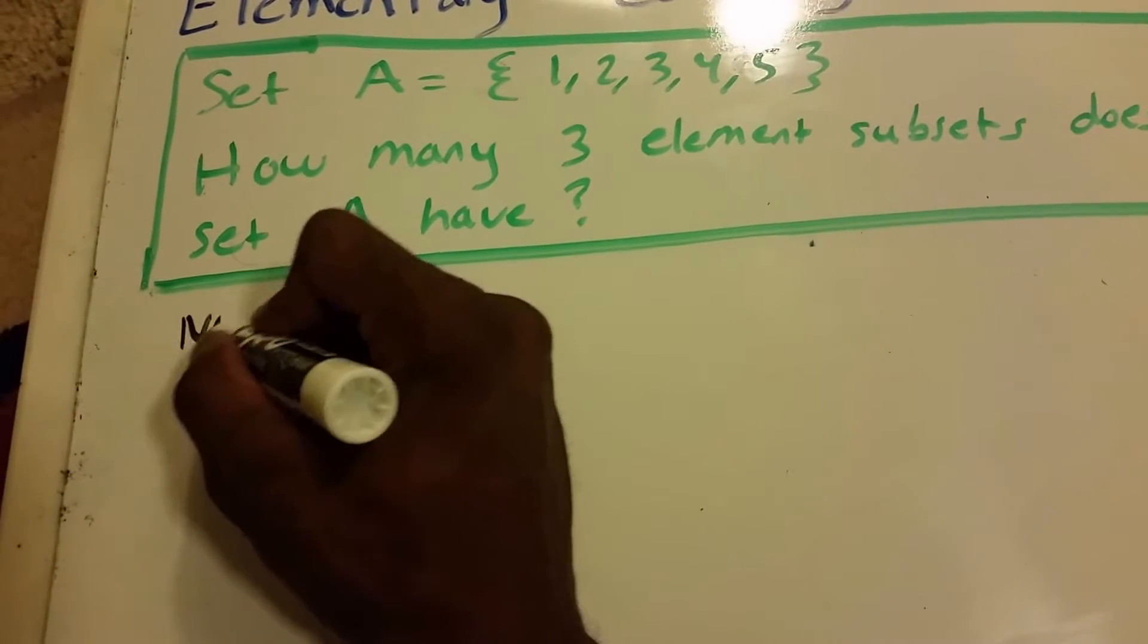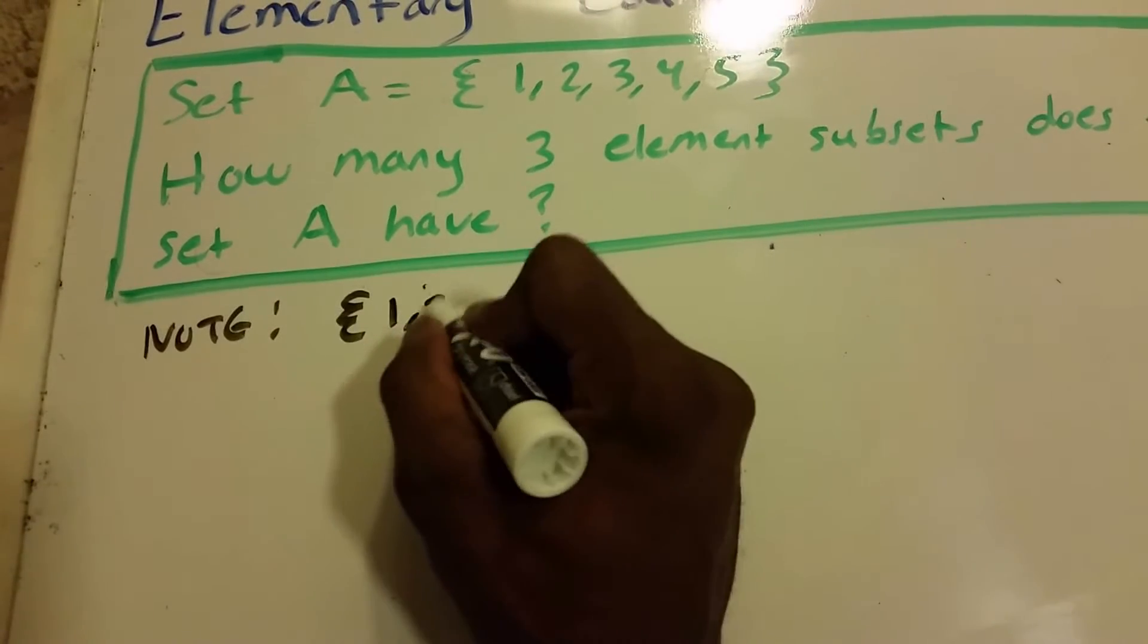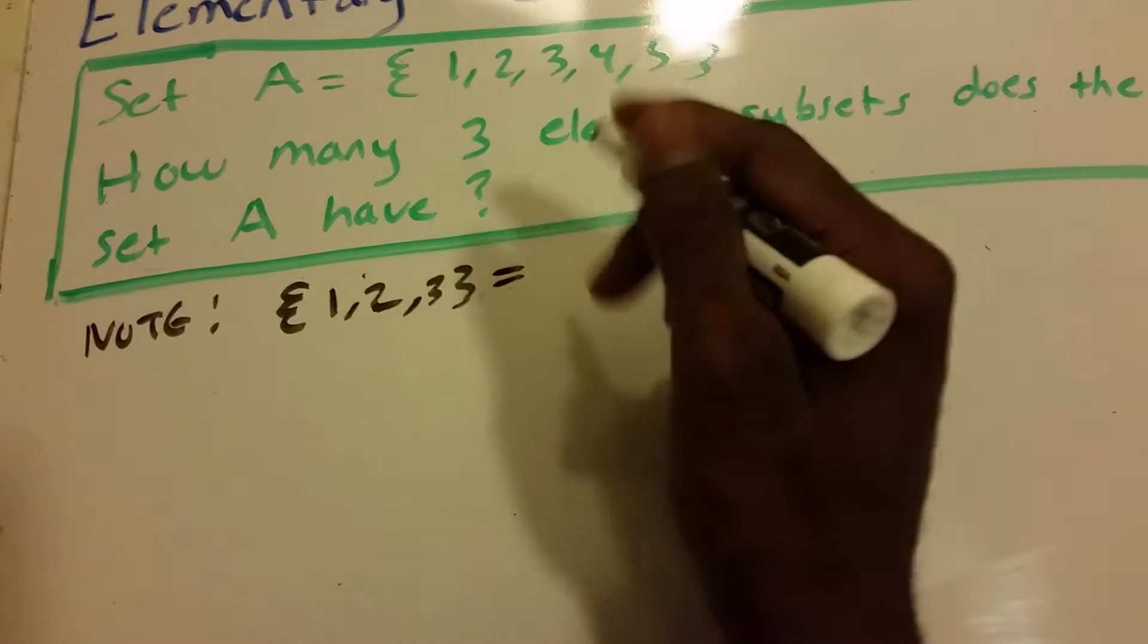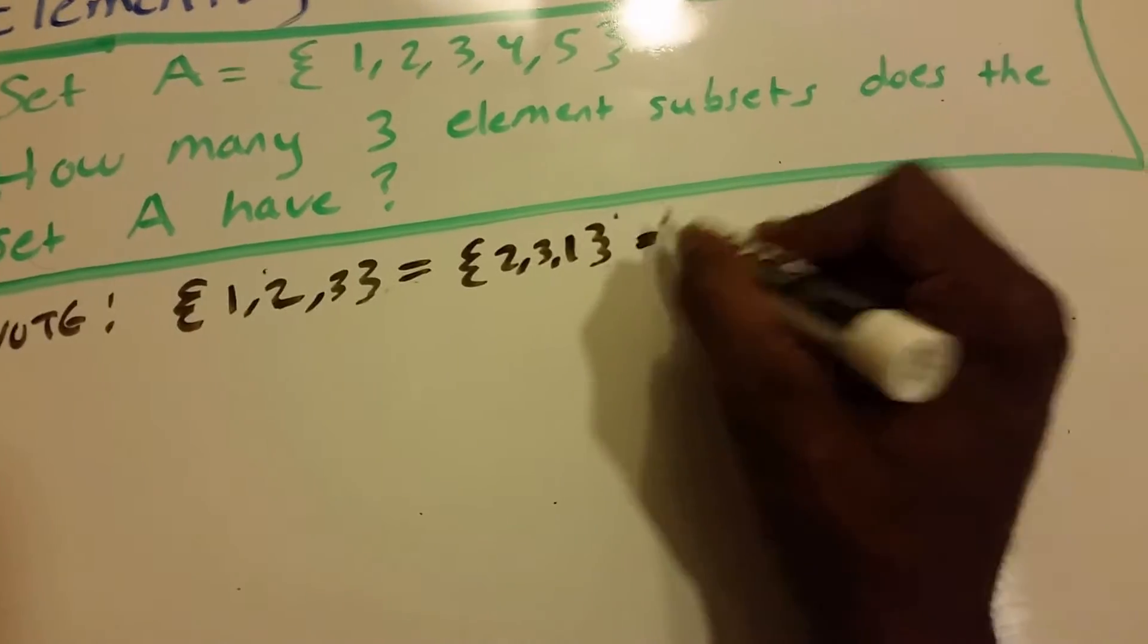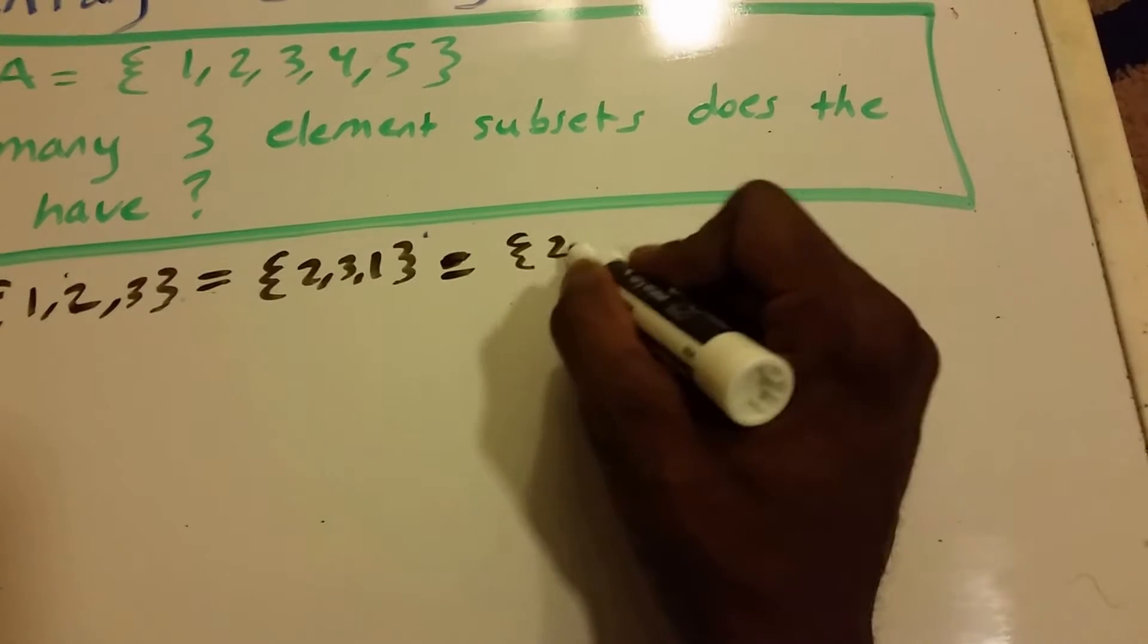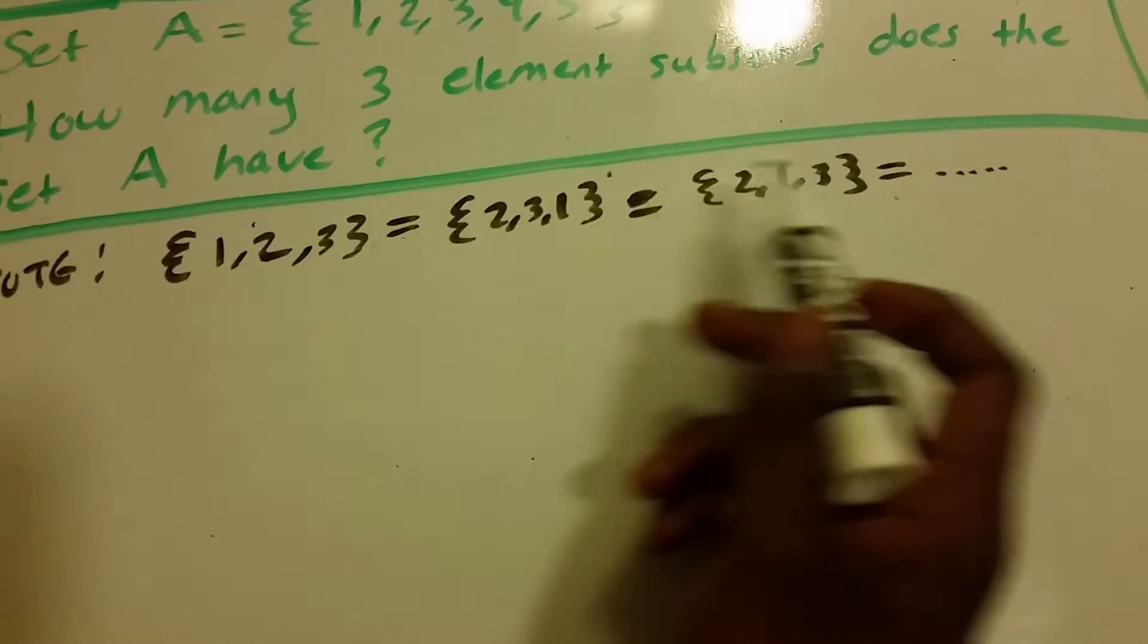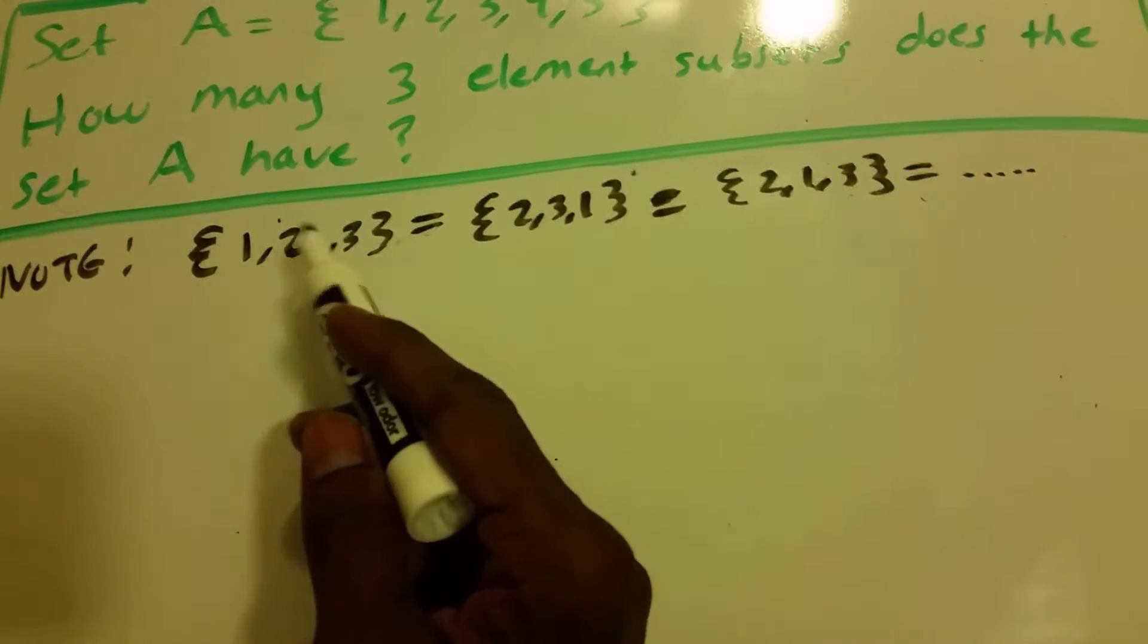And for us to figure that out, you have to understand sets. So I'm going to put a little note here. Note that the set 1, 2, and 3 is equal to the set that contains 2, 3, and 1, which is equal to the set 2, 1, 3, and so on. You can see that I'm just rearranging the elements within the set, but they're still all equivalent. So what this means is that the order of the elements does not matter.